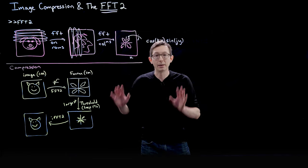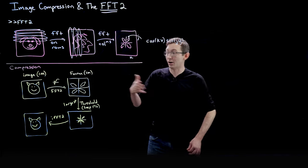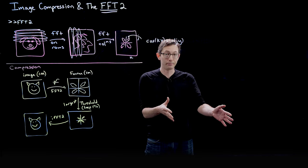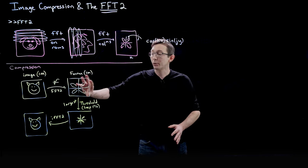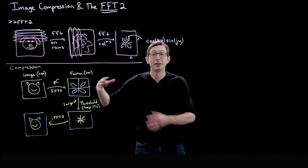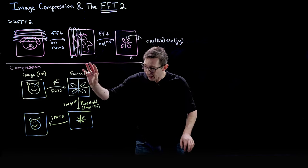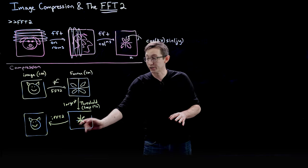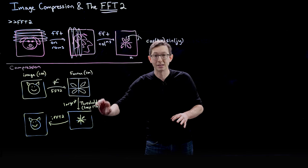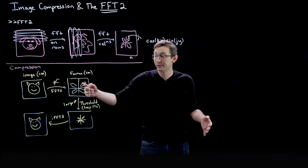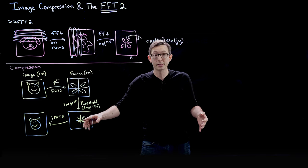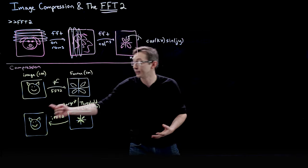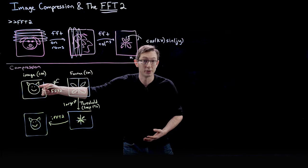Parseval's theorem tells me that if I only threshold the very, very small Fourier coefficients, it has negligible degradation of my original image. This is the basis of all image compression and audio compression — when you Fourier transform your signal, most of those Fourier transform coefficients are very, very small, negligibly small. And because of Parseval's theorem, if I zero out those small Fourier coefficients and only keep the largest ones — often only 1% or 2% — when I inverse Fourier transform, the image looks almost identical to the original full resolution image.